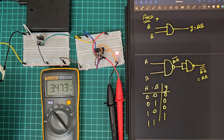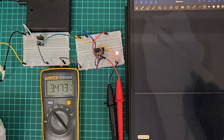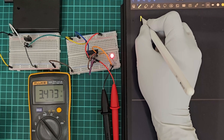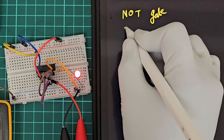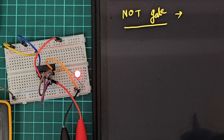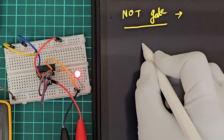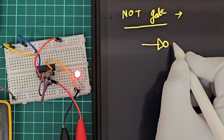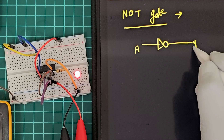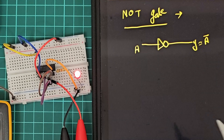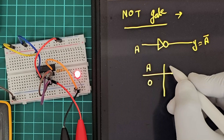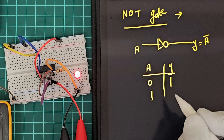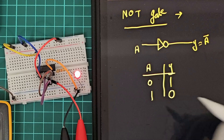Today we will show you how to make a NOT gate by using the NAND gate IC. The NOT gate symbol has A as input and A-bar as output. That means if we give 0 at the input then the output will be 1, and if we give 1 at the input then the output will be 0.